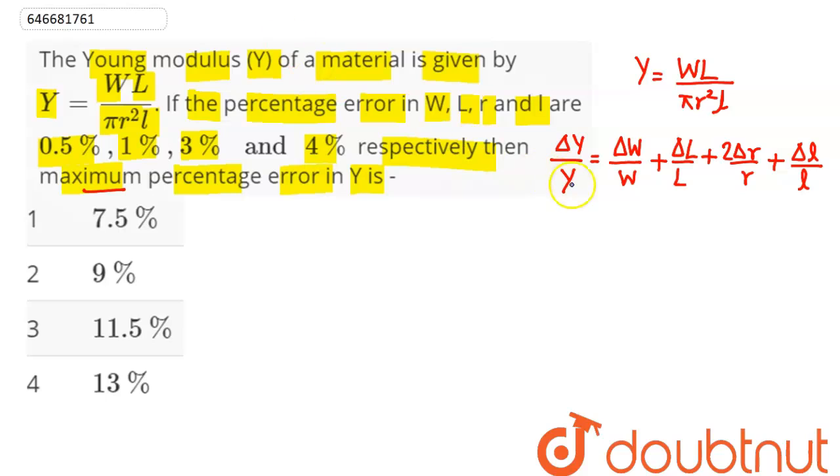Now this simplifies as ΔY/Y equals the sum of percentage errors. The percentage error in W is 0.5%, and the percentage error in L is 1%.